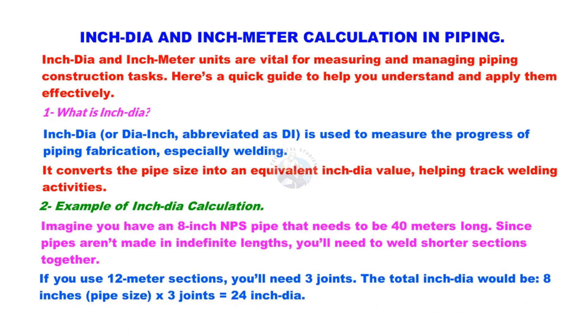If you use 12-meter long sections, you'll need 3 joints. The total inch-dia would be 8 inches, that is the pipe size, multiplied by 3 joints. The total inch-diameter is 24 inches.